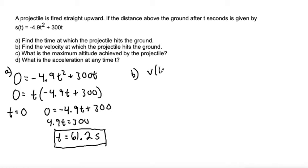So the velocity function would be, 2 times 4.9 is 9.8, so negative 9.8 t, that's using the power rule, plus 300, because the derivative of 300t is 300.